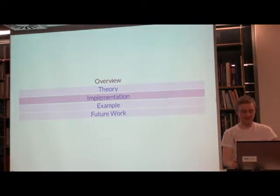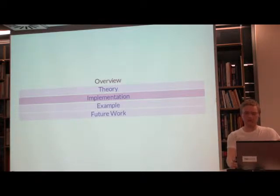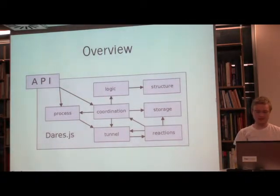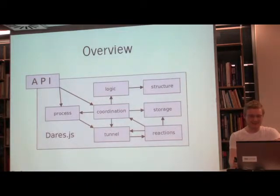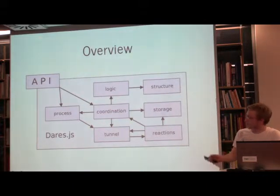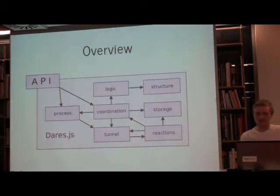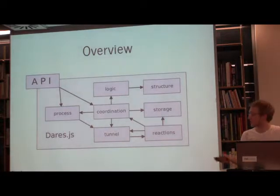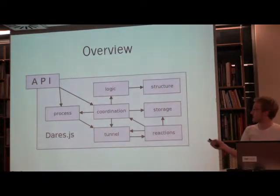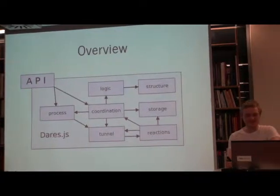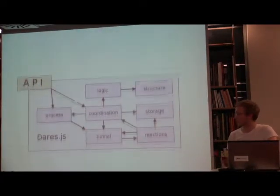Good evening. We heard a lot about the theory and we sat down and implemented such a system. It's called dares or dares.js. In this schematic, arrows represent function calls — API calls, process calls, coordination calls — and boxes are either individual node modules, like the API module, or collections of modules, like the structures collection. If you want to use dares.js, the first thing you need to know is the API.